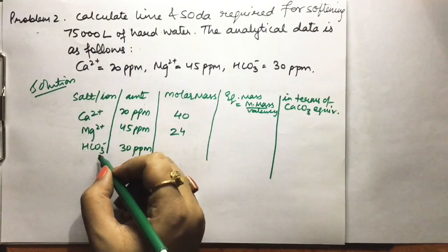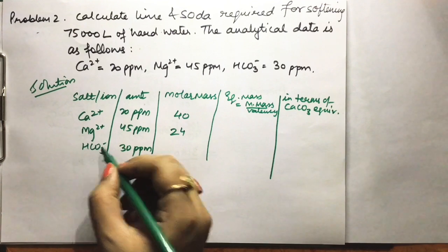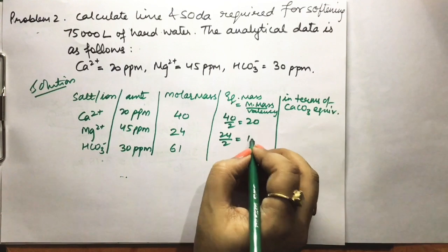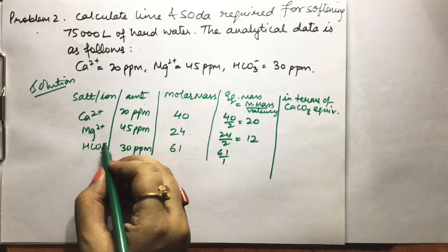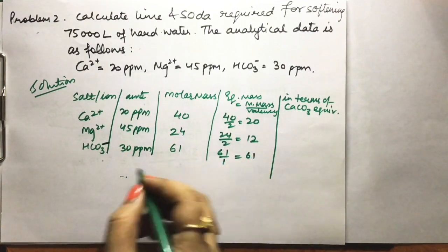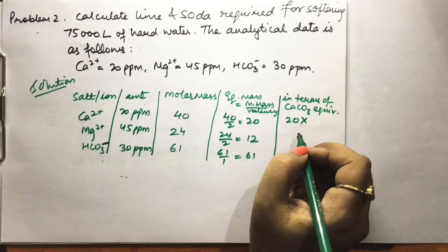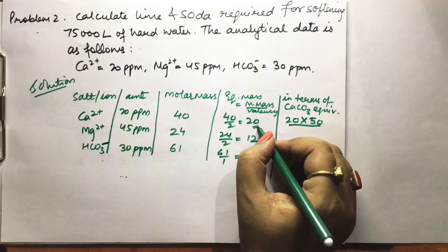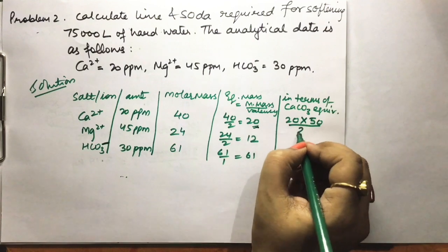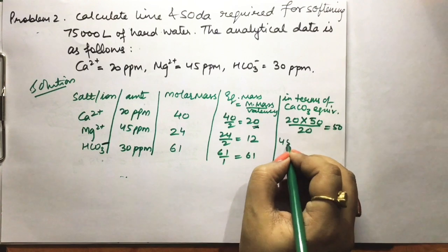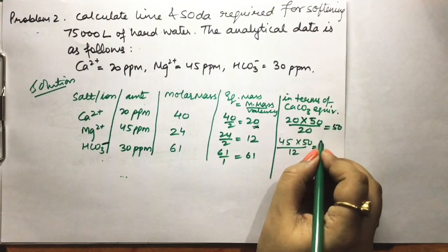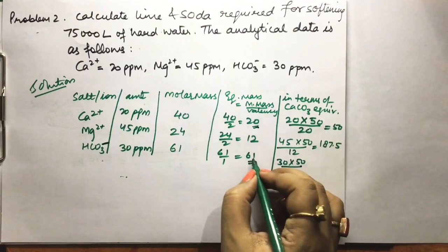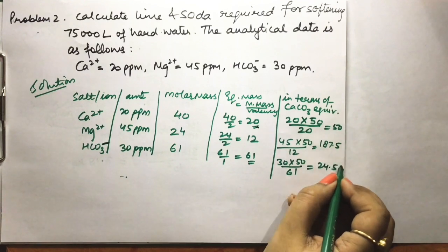Ca²⁺: molar mass (atomic mass) = 40, equivalent mass = 40/2 = 20. Mg²⁺: atomic mass = 24, equivalent mass = 24/2 = 12. Bicarbonate (HCO3⁻): molar mass = 61, equivalent mass = 61/1 = 61. Calcium carbonate equivalents: Ca²⁺ → 20 × 50/20 = 50; Mg²⁺ → 45 × 50/12 = 187.5; HCO3⁻ → 30 × 50/61 = 24.59.